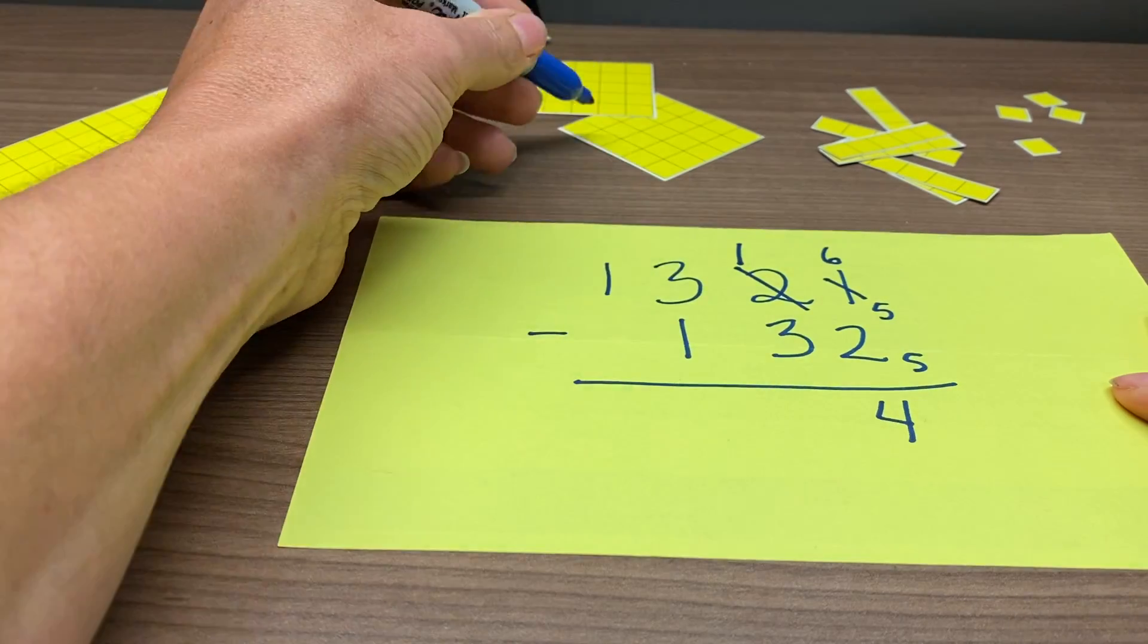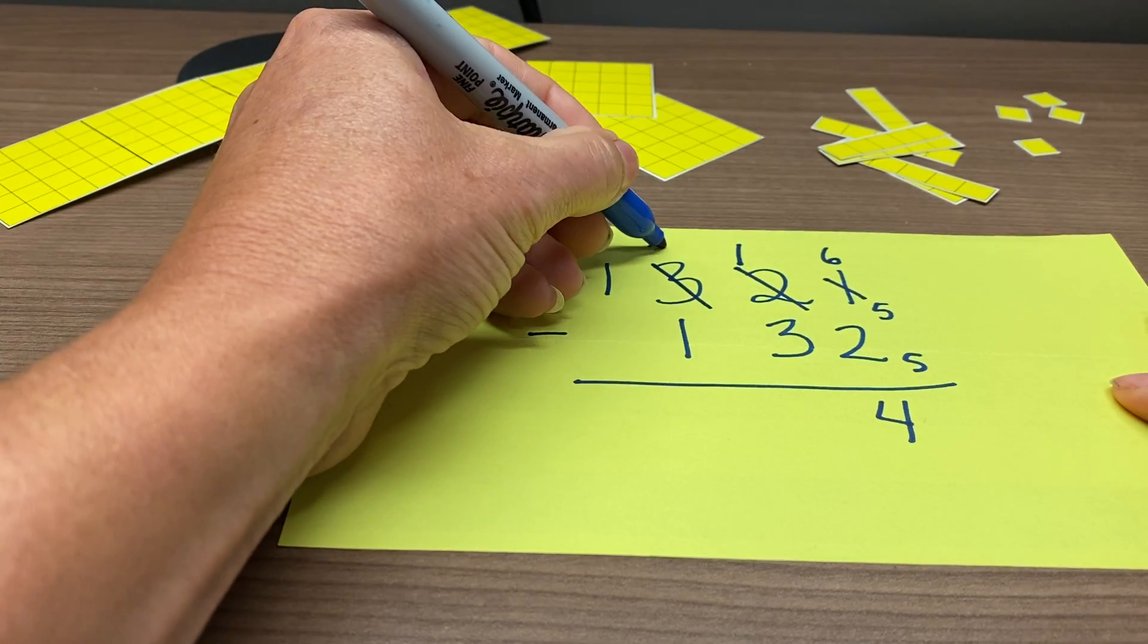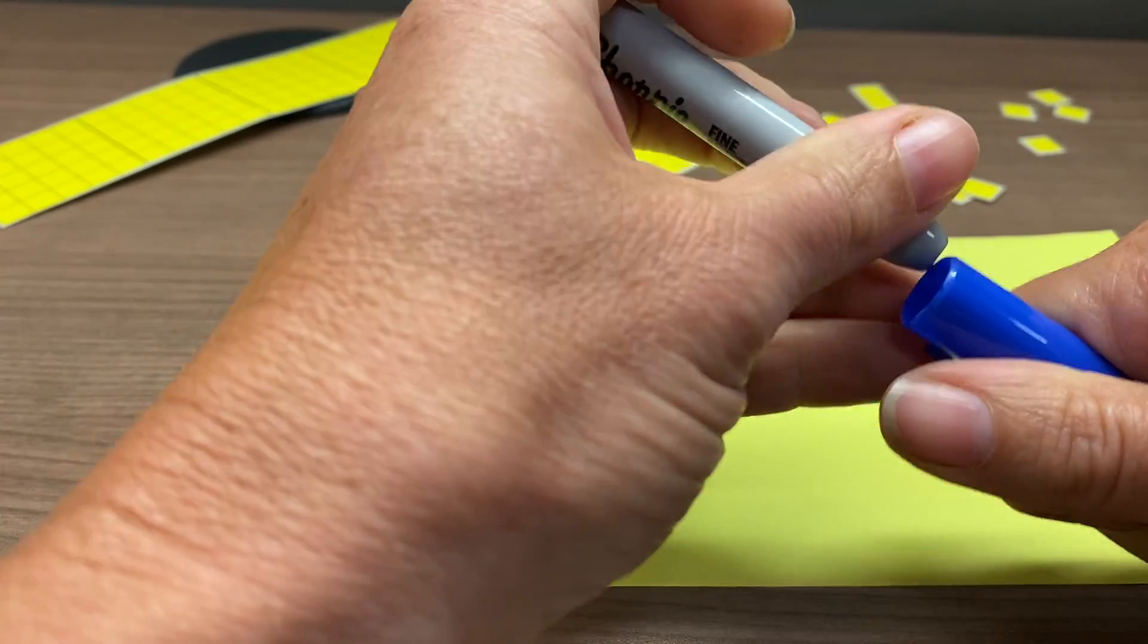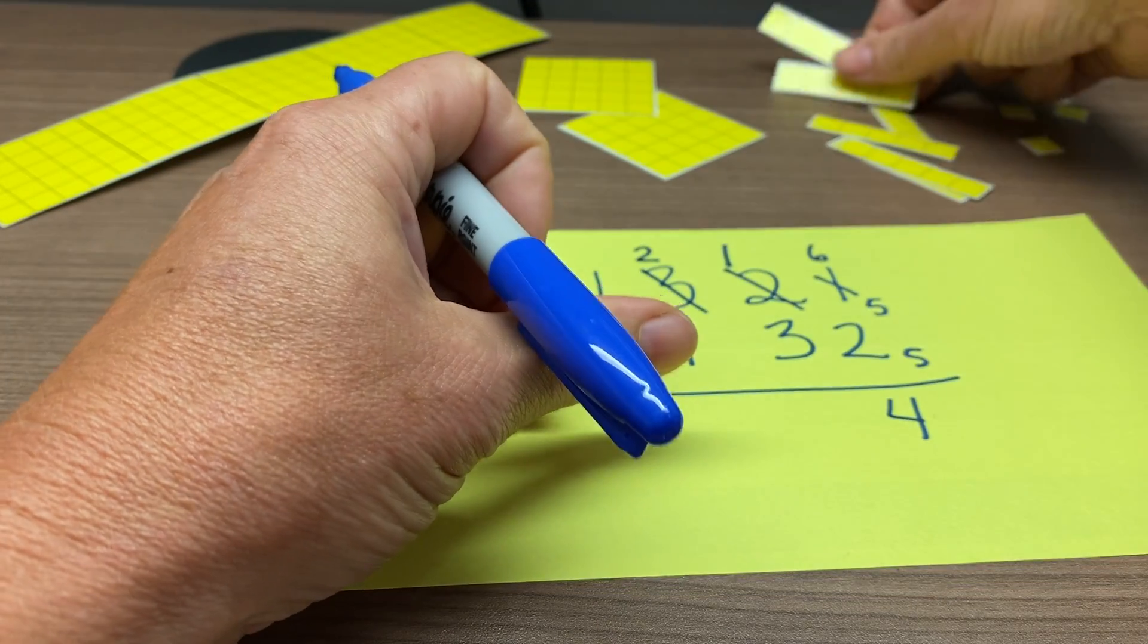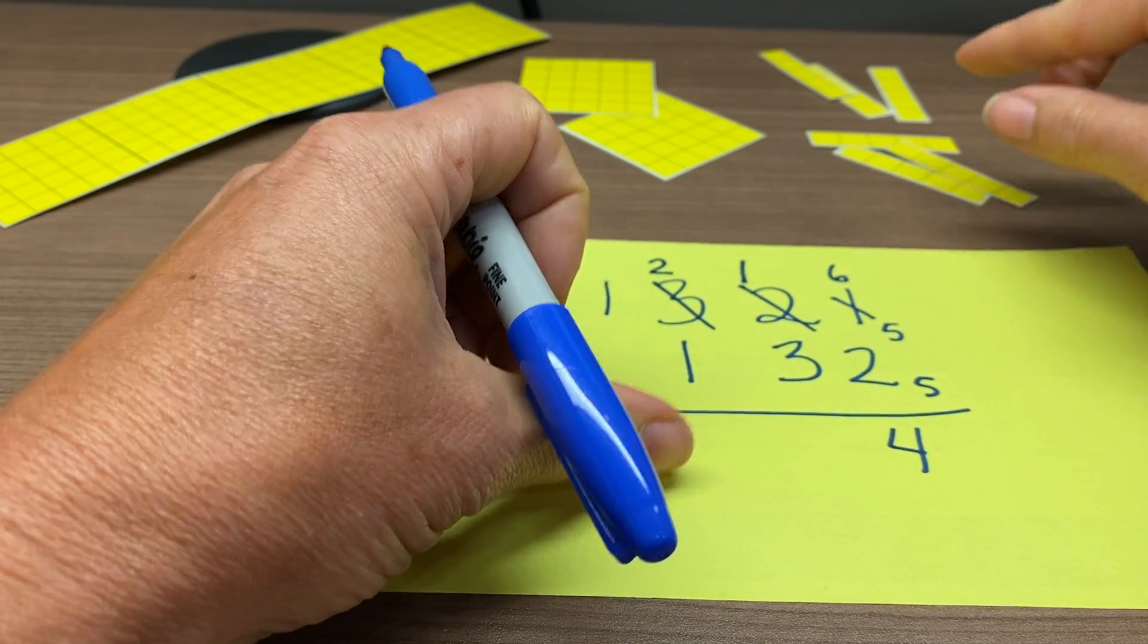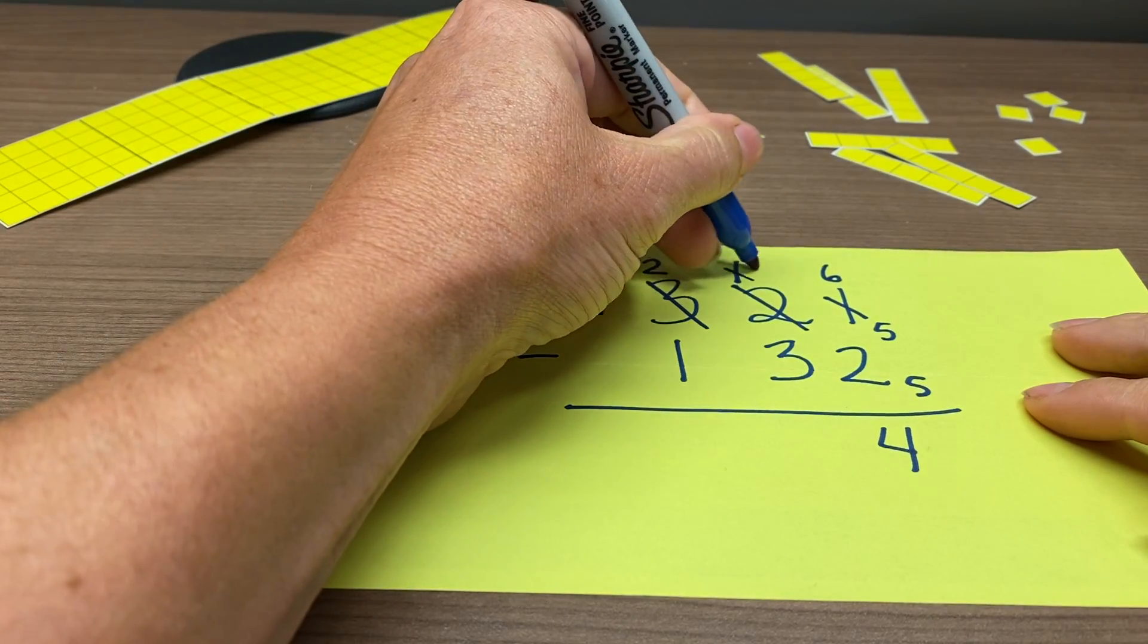So, in this place value now, the 25s, we only have 2 of those left, and then here we have, we had 1 before, and now we have 5 more, so all together we have 6 currently.